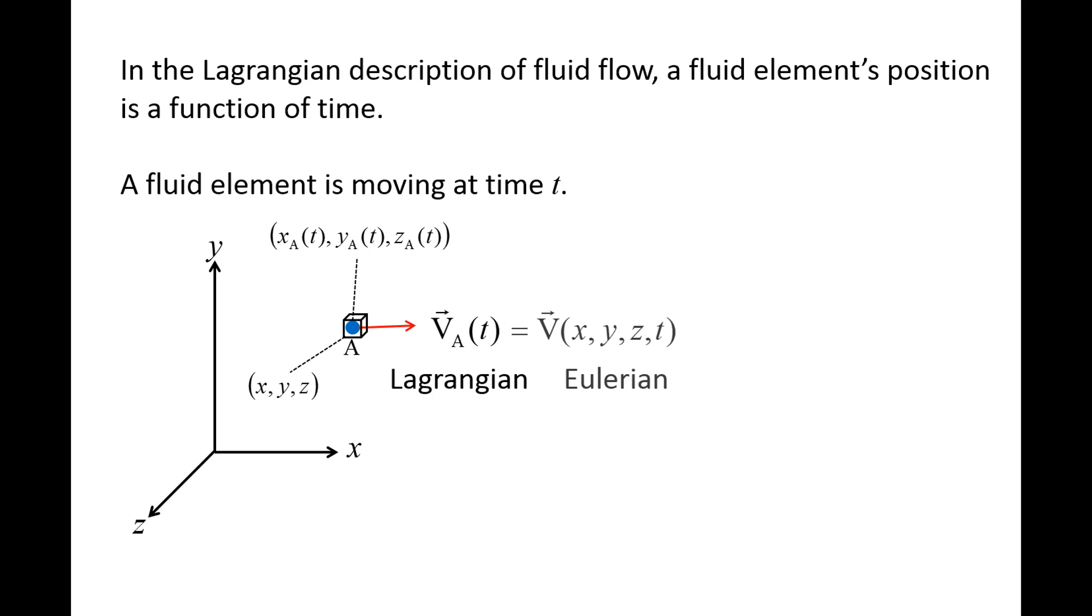This means that the velocity of fluid element a from the Lagrangian point of view, which we call va, is the same velocity as seen by an observer from the Eulerian point of view, which we call v. As we discussed earlier, in the Eulerian viewpoint, velocity is a function of position and time.